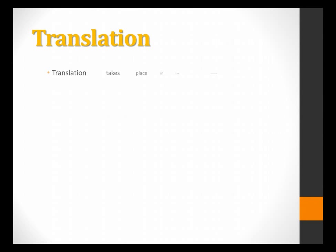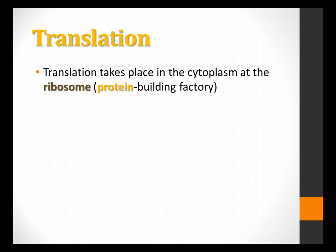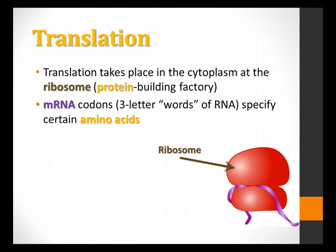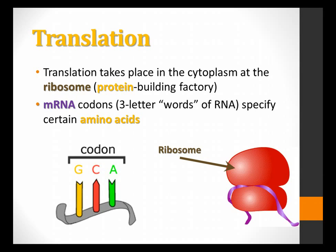All right, let's talk about translation. Translation takes place in the cytoplasm at the ribosome. Perhaps you remember that before, but that is our protein-building factory. Here's my ribosome and there's the mRNA stuck through it. And mRNA has codons. You remember those before, those are my three-letter words of RNA, like AUG, CGA, GGG. All of those are codons, words of RNA, that specify for amino acids. More on that in just a second.